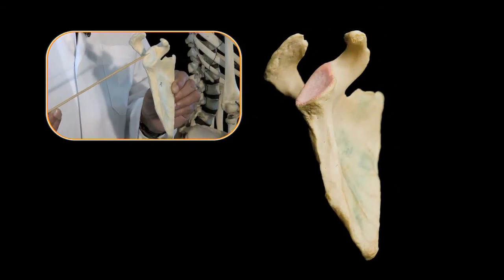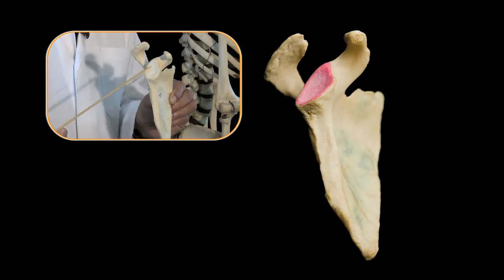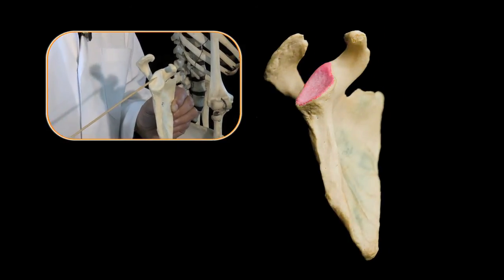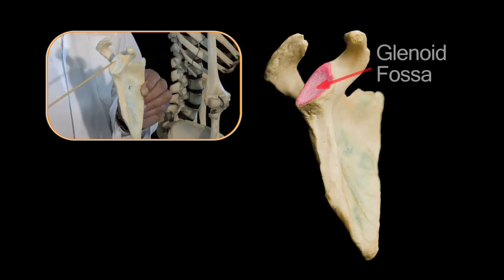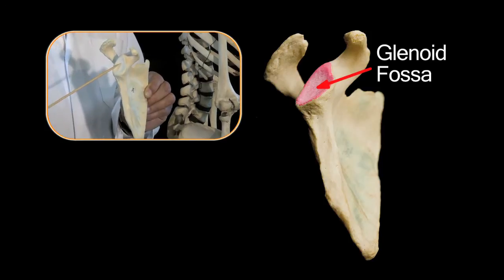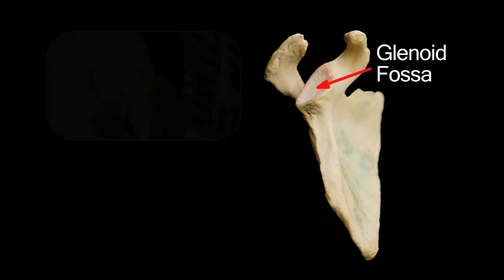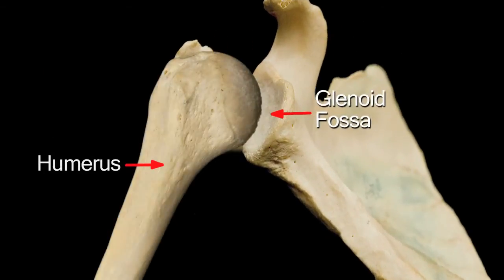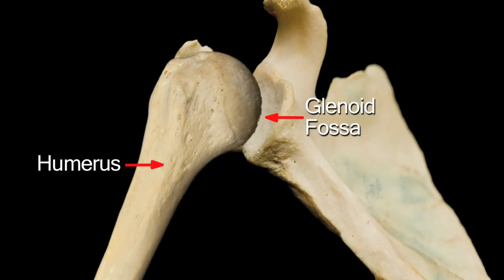And this lateral angle of the scapula is the thick truncated angle which we call the glenoid fossa, which is one of the two surfaces that make up the shoulder articulation.